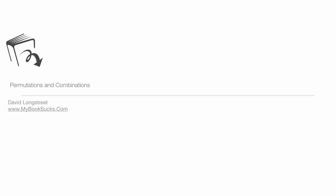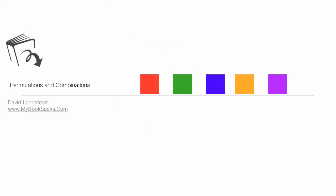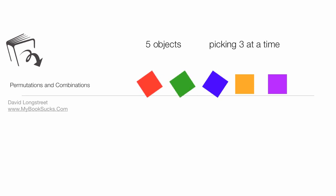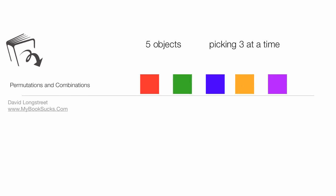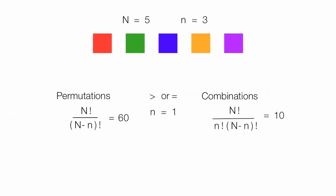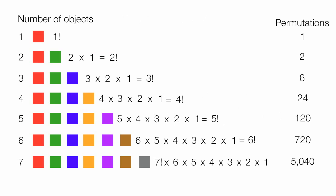In this video, I'm going to discuss permutations and combinations. I'm going to have five objects picking three at a time, different combinations of three, and I'm going to calculate permutations and combinations and walk you through how those calculations are made. In the previous video in this playlist, I discussed in some detail the differences between permutations and combinations, and it may be helpful for you to watch that video as well.